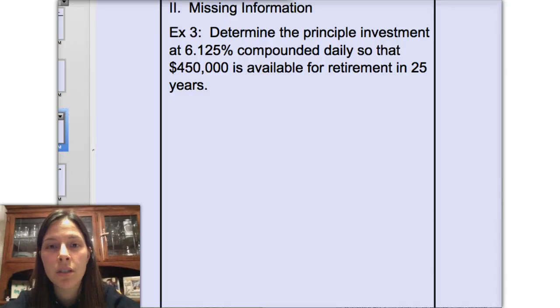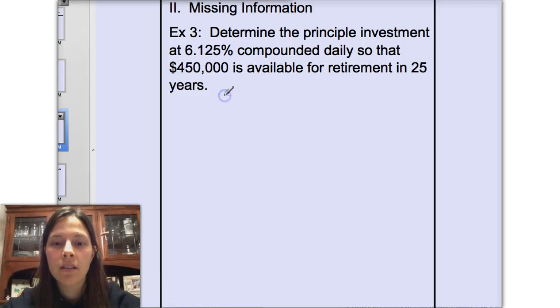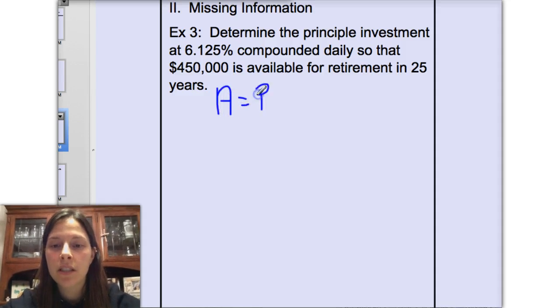Our last example is similar to the first two, except this time we're looking for the principal, and we're actually given the amount after time. We're still using our PERT formula because our account is compounded continuously.